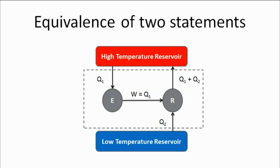In this slide, we will violate the Kelvin-Planck statement and show that it leads to the violation of the Clausius statement. Consider the system shown in the figure: high and low temperature reservoirs are connected to a heat pump and an ideal heat engine. This ideal heat engine violates the Kelvin-Planck statement — that is, it converts all the heat supplied into an equivalent amount of work. Here, Q1 amount of heat is supplied to the engine, which produces Q1 amount of work, which is not possible as per the Kelvin-Planck statement. That means we are violating the Kelvin-Planck statement here.